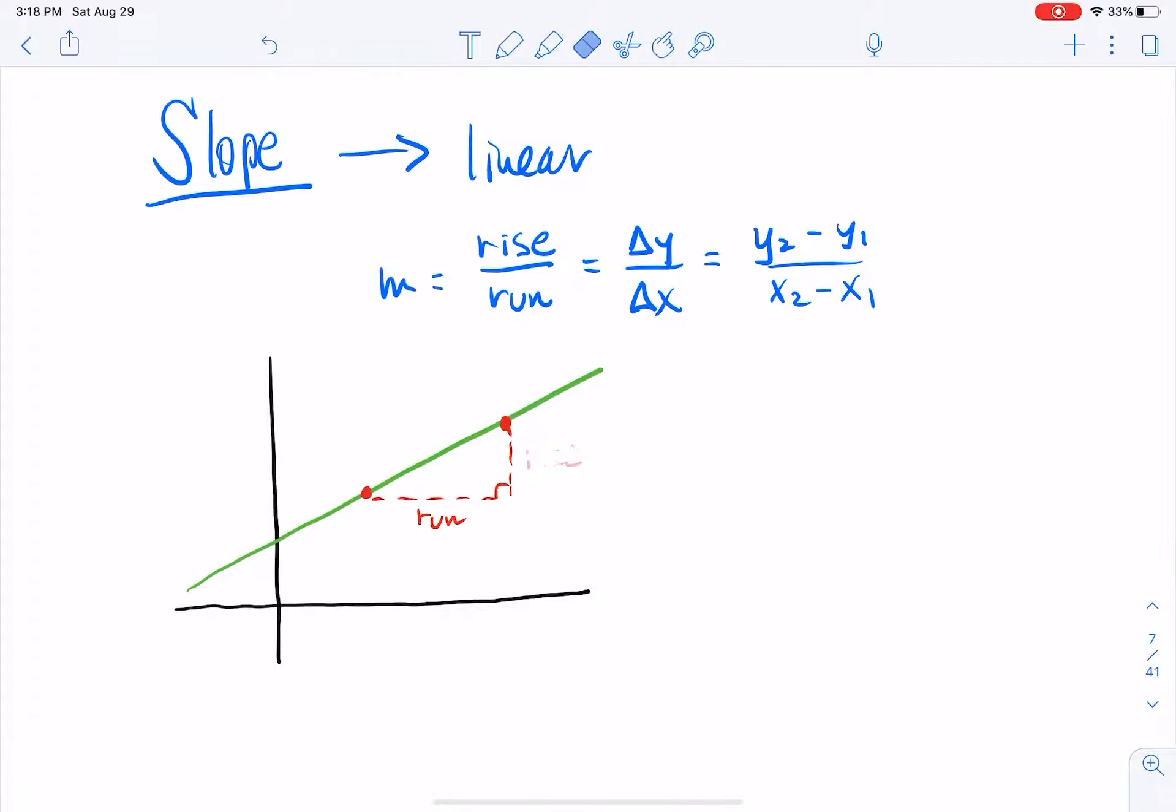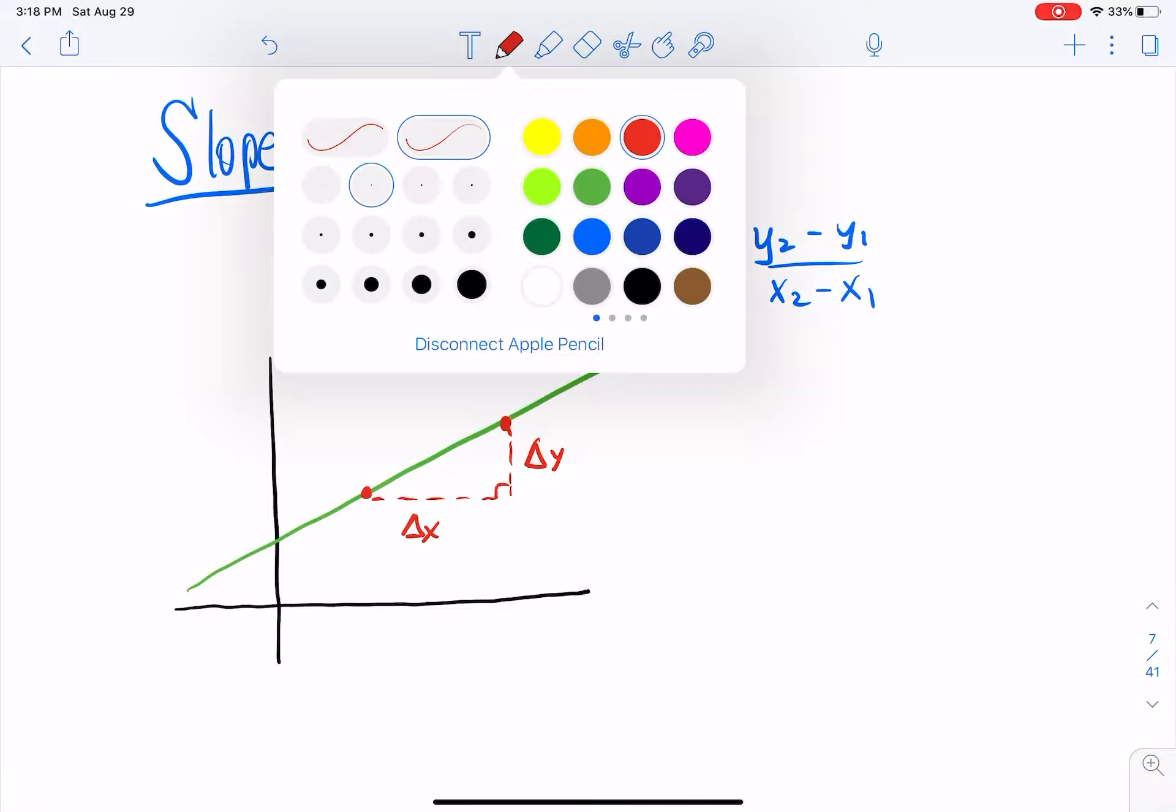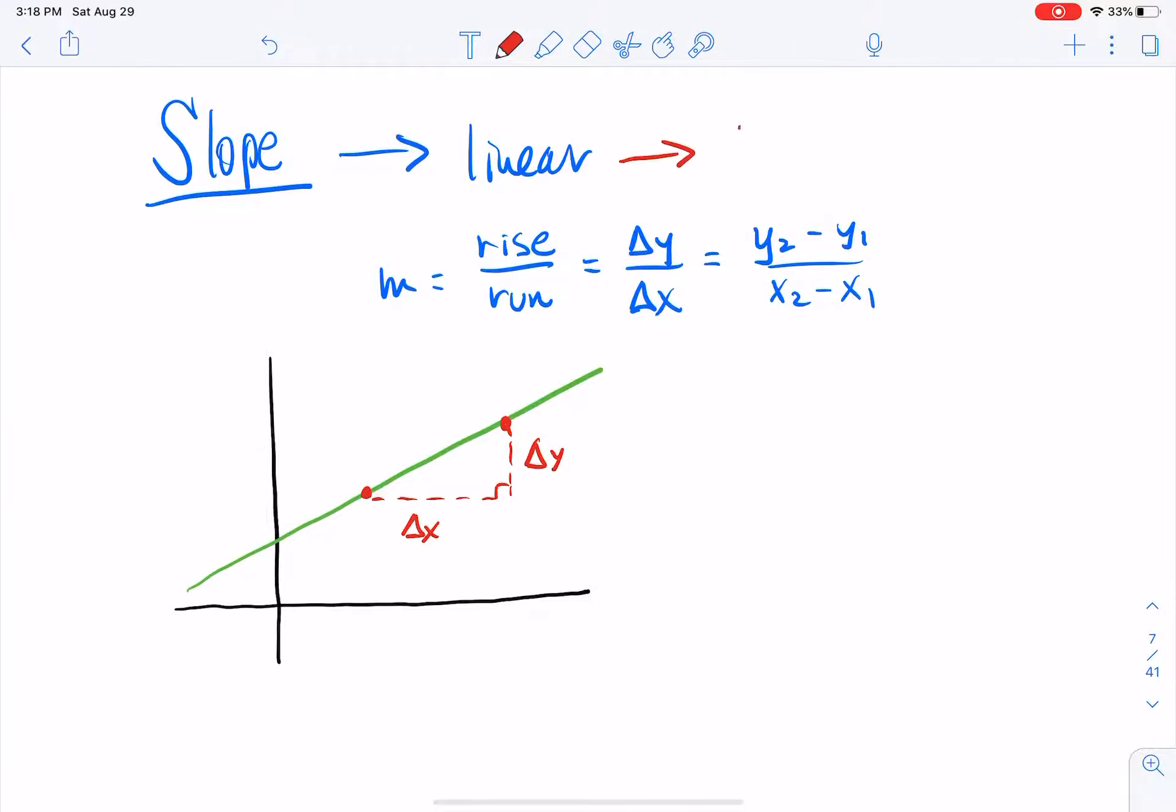Do you remember learning this stuff in algebra and thinking, man, this stuff is, man, this is really complex? Probably not. Because slope is so easy. And believe it or not, that's what the whole first part of calculus is all about. It's about slope. Well, actually, the first part is about limits. And then we start talking about slope. So let's say I have myself a line here.